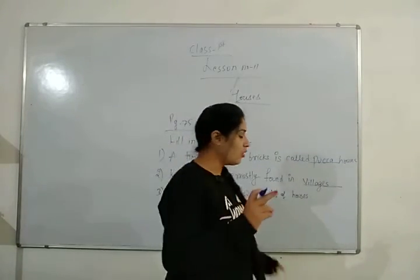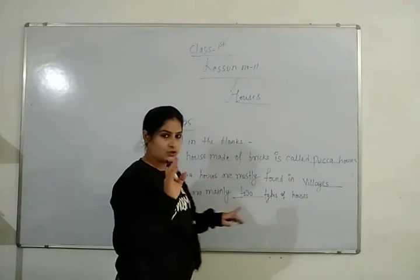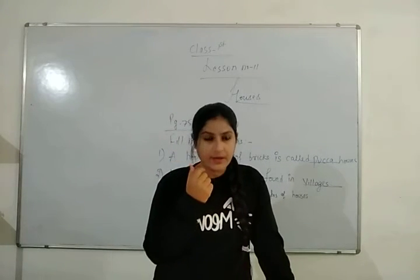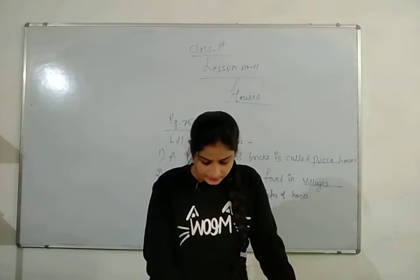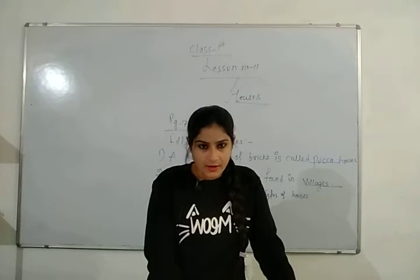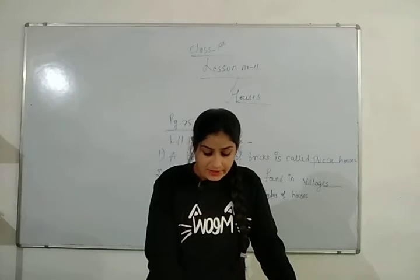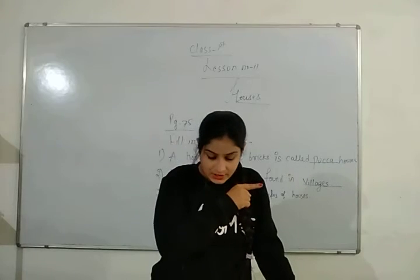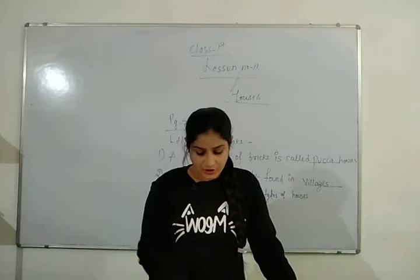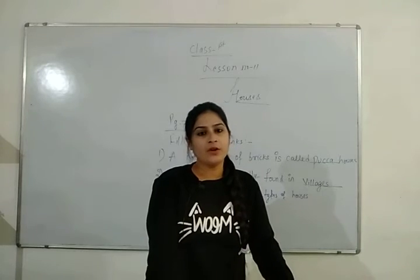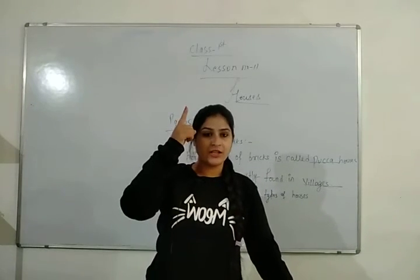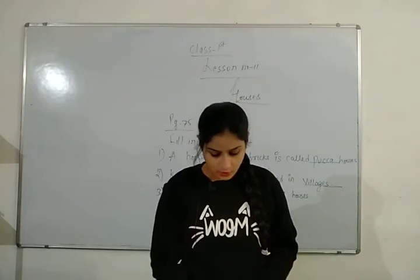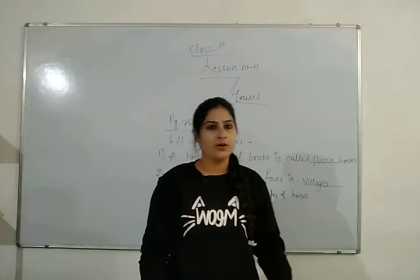Now let's see the rooms in my house. My house has many rooms. A room has a roof, a door, a floor, and windows. There is a door to go outside or inside.